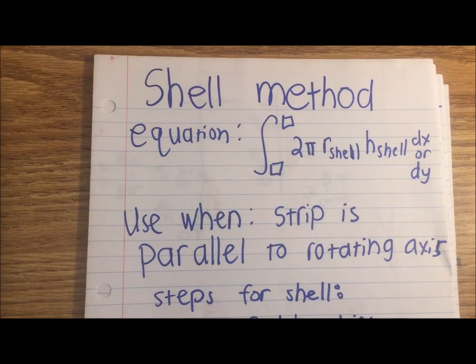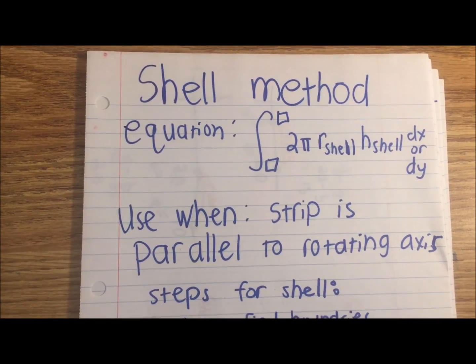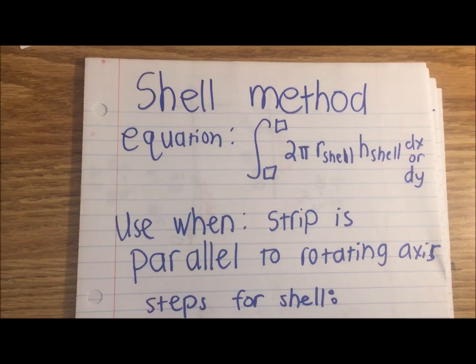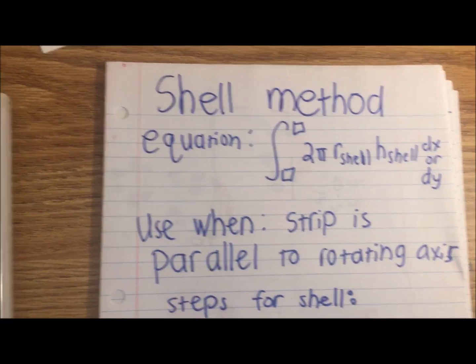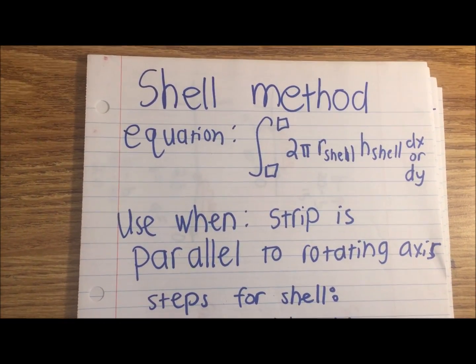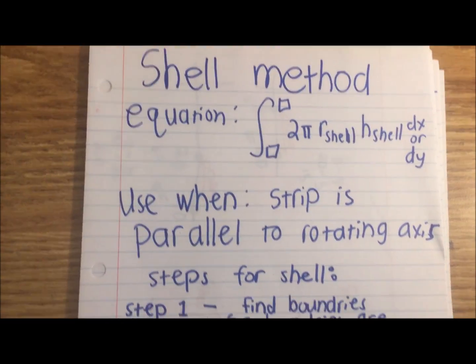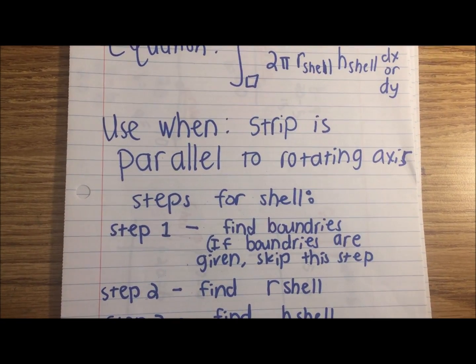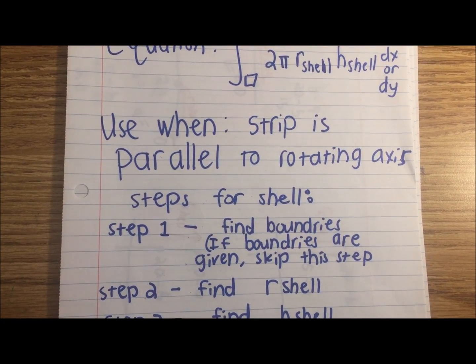In this tutorial, I'm going to go over the shell method. The equation for the shell method is the integral of 2π r_shell · h_shell dx or dy. You use the shell method when the strip is parallel to the rotating axis.